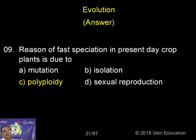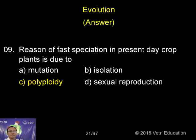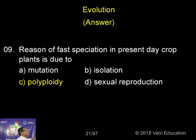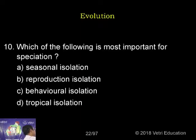New species are found through fast speciation not because of mutation, because mutation is always rare, but we can increase the number of chromosomes artificially so that we get polyploidy, which results in the formation of new species.